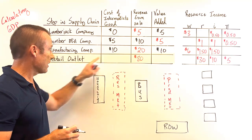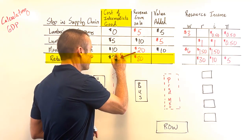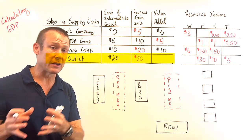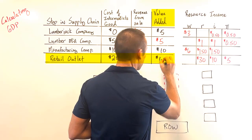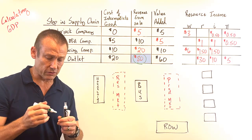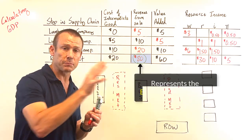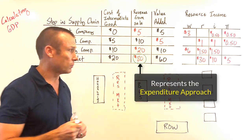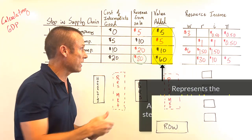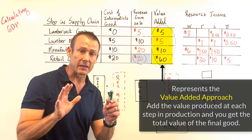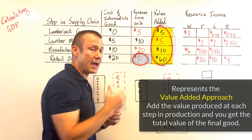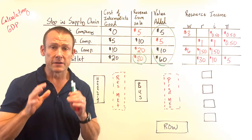Since the bat was sold for twenty dollars, the retail outlet bought it for twenty dollars and sold it to the end user for eighty dollars — adding sixty dollars of value. The sale of the final good, eighty dollars, is the number that goes into the expenditure approach. If you sum up all the value added at each step, you also get eighty dollars — that's the value-added approach. Both give you the same result.